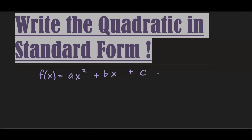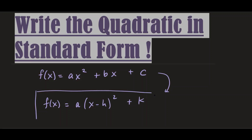The standard form is f(x) = a times (x - h)² + k. That's the form we're looking for. We want to take the quadratic and, by using the method of completing the square, write it in this form. Let me give you a couple of examples of how to do that.